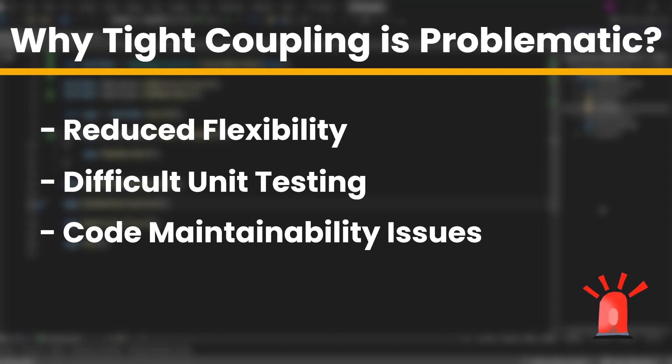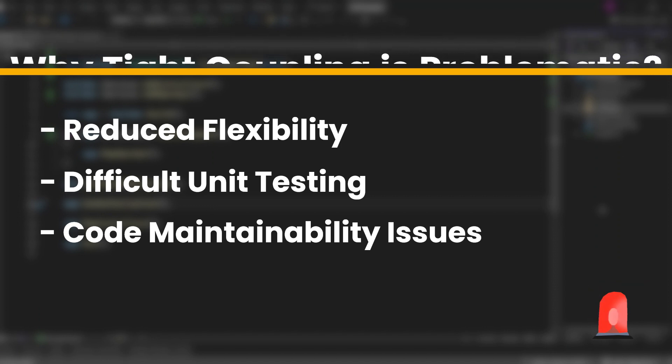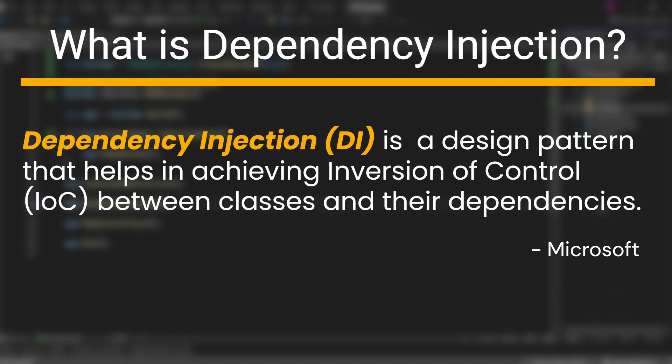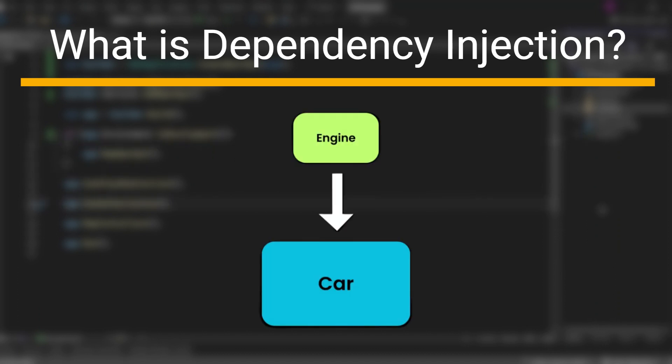So, how do we fix this? This is where dependency injection comes in. What is dependency injection? Simply put, dependency injection or DI is a design pattern that helps in achieving inversion of control between classes and their dependencies. Instead of a class creating its dependencies, these dependencies are injected into it, which makes the application more modular and testable. Dependency injection in .NET is a built-in part of the framework, along with configuration, logging, and the options pattern. Why is dependency injection important? Well, it reduces coupling, enhances maintainability, and improves testability.